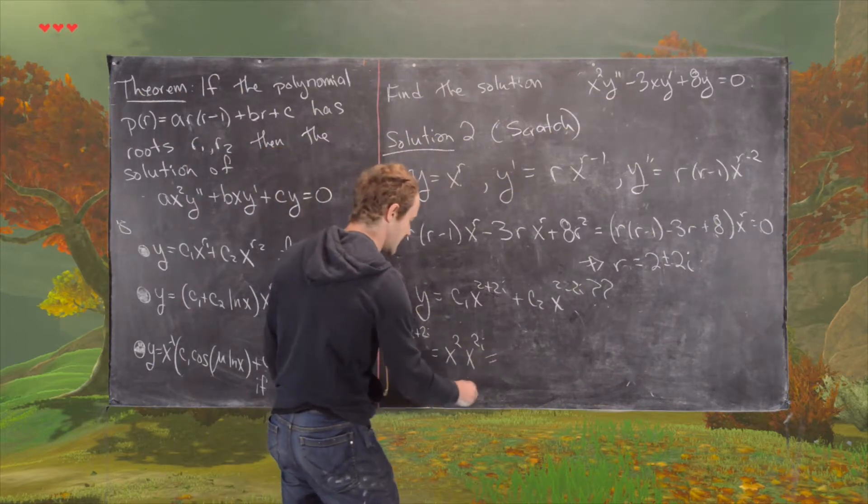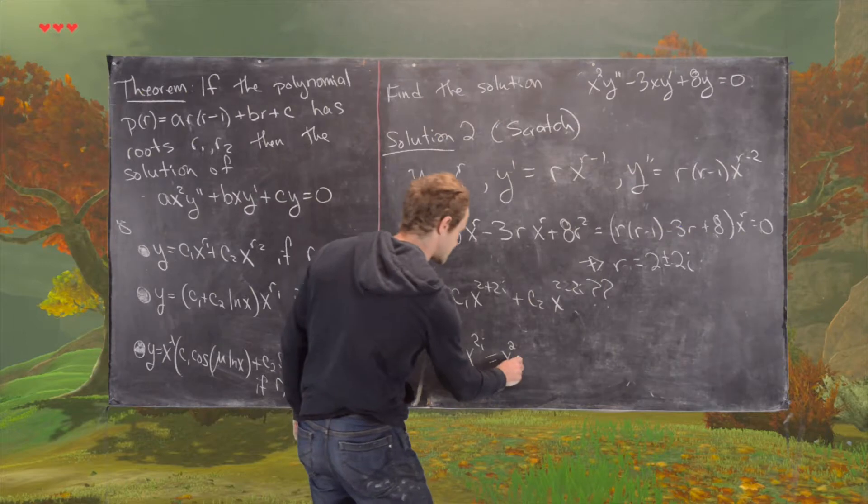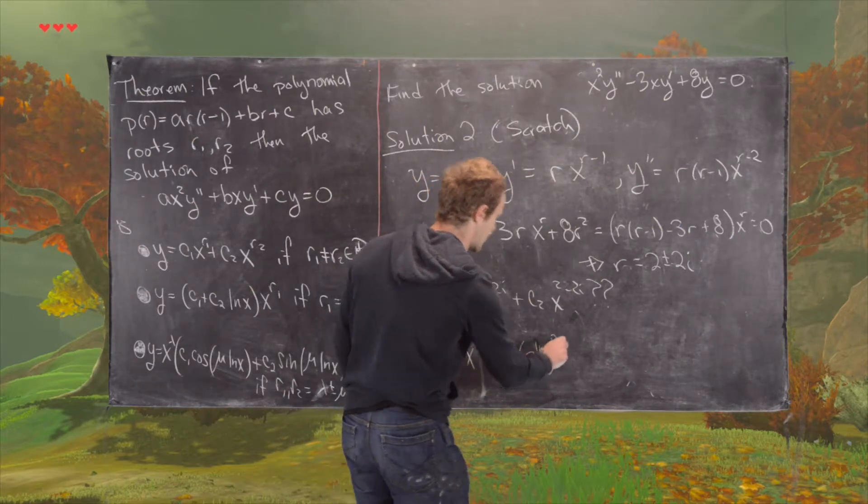And then that's the same thing as x squared times e to the natural log of x all to the 2i.